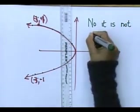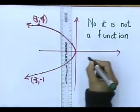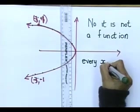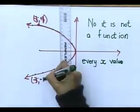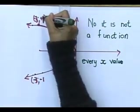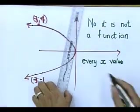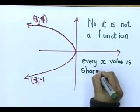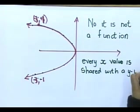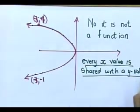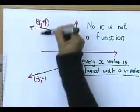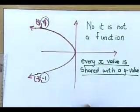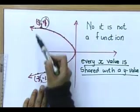Can this be a function? No. It is not a function. Why? Because every x value — every x value — is shared. There is one y value, but it has the same x value. That is a y value, and it has the same x value. Every x value is shared with a y value. Every x value is shared — one y value has more than that x value. The y value is different, but it has the same x value.